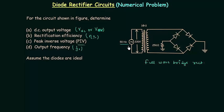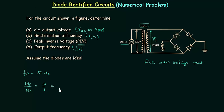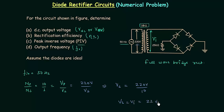The input frequency F_in is equal to 50 Hz and the turns ratio NP by NS is equal to 10 by 1. We know NP/NS = VP/VS, and the voltage on the primary side is 220 volts. So VS, the input voltage, is equal to 22 volts.